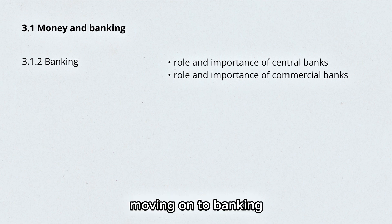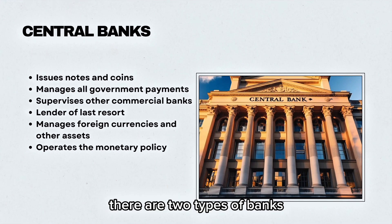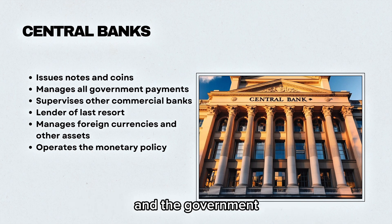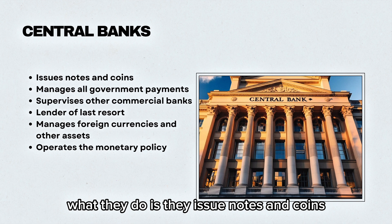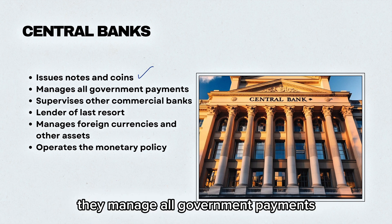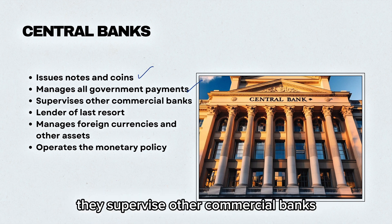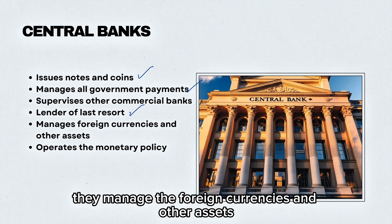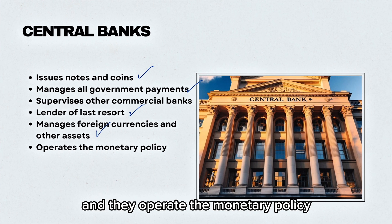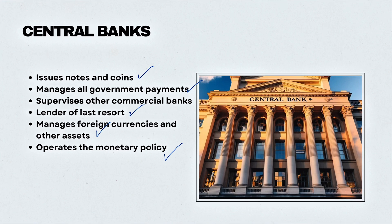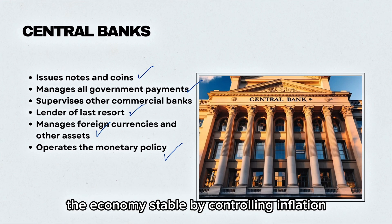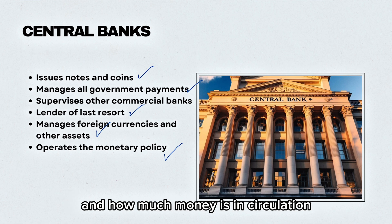Moving on to banking. There are two types of banks. A central bank is the bank for the country and the government. What they do is they issue notes and coins, manage all government payments, supervise other commercial banks within the economy, act as the lender of last resort, manage foreign currencies and other assets, and operate the monetary policy. The key objective of a central bank is to keep the economy stable by controlling inflation and how much money is in circulation.